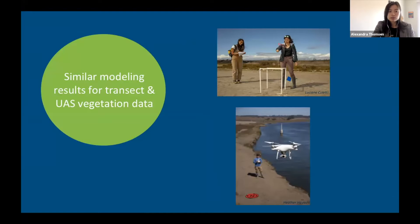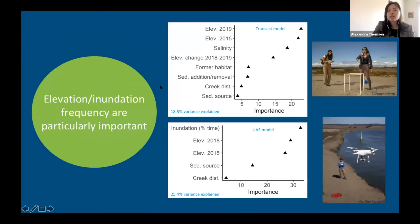We ended up finding similar modeling results for the transect and UAS vegetation data in what predictors turned out to be important for the models, which predictors were more versus less important, and also the relationships between each predictor and the related vegetation cover dataset. The most important predictors for both models were related to the elevation of the marsh following sediment addition, and also a related factor which was inundation frequency. So basically we were finding more plants at the higher elevation, very infrequently inundated areas on the marsh.